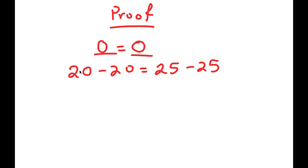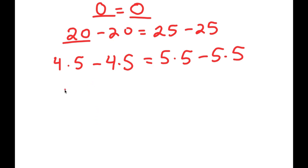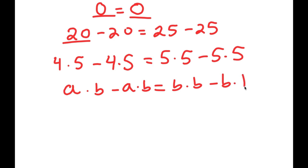Now I'll rewrite 20 as 4 times 5, and rewrite 25 as 5 times 5, giving me 4 times 5 minus 4 times 5 equals 5 times 5 minus 5 times 5. In the form a times b minus a times b equals b times b minus b times b, I can factor out the greatest common factor. On the left I factor out a, giving a times (b minus b), and on the right I factor out b, giving b times (b minus b).